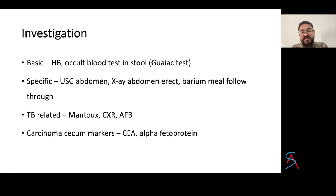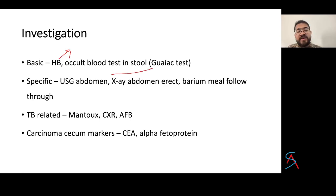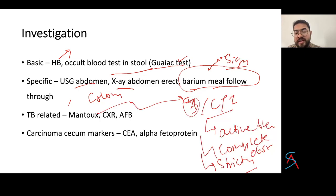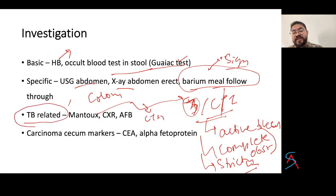For investigations: basic — hemoglobin (for anemia, blood loss); Guaiac test for occult blood in stool in suspected carcinoma cecum. Specific — ultrasound abdomen, X-ray abdomen erect, barium enema (for which they may ask about specific signs and diagnoses). Colonoscopy is also specific — remember the three contraindications: active bleeding, complete obstruction, or stricture formation. If unable to diagnose, do a CT scan of the abdomen. For suspected TB: Mantoux test, X-ray, and sputum with acid-fast staining, CBNAAT, or GeneXpert.